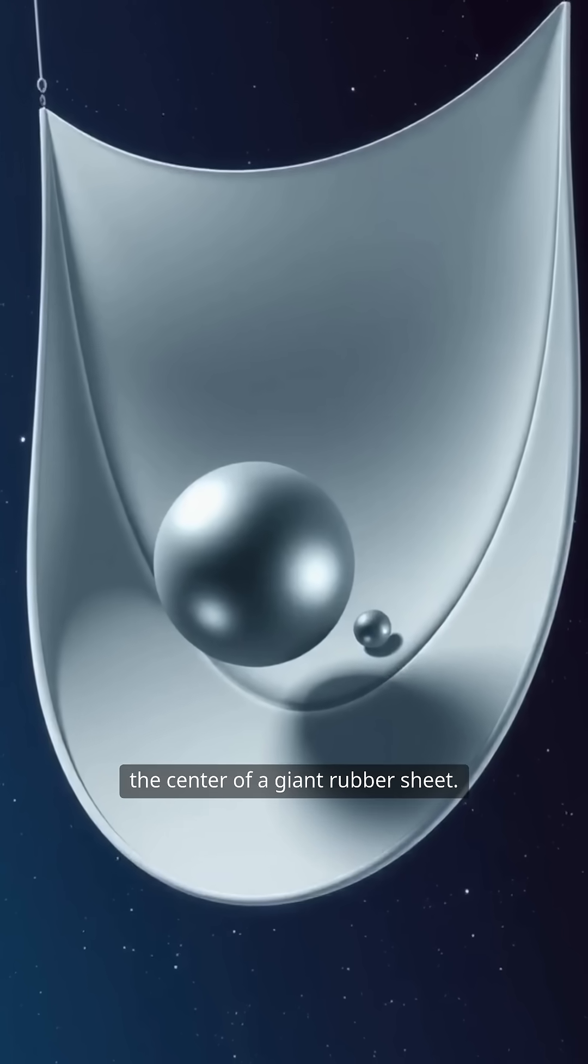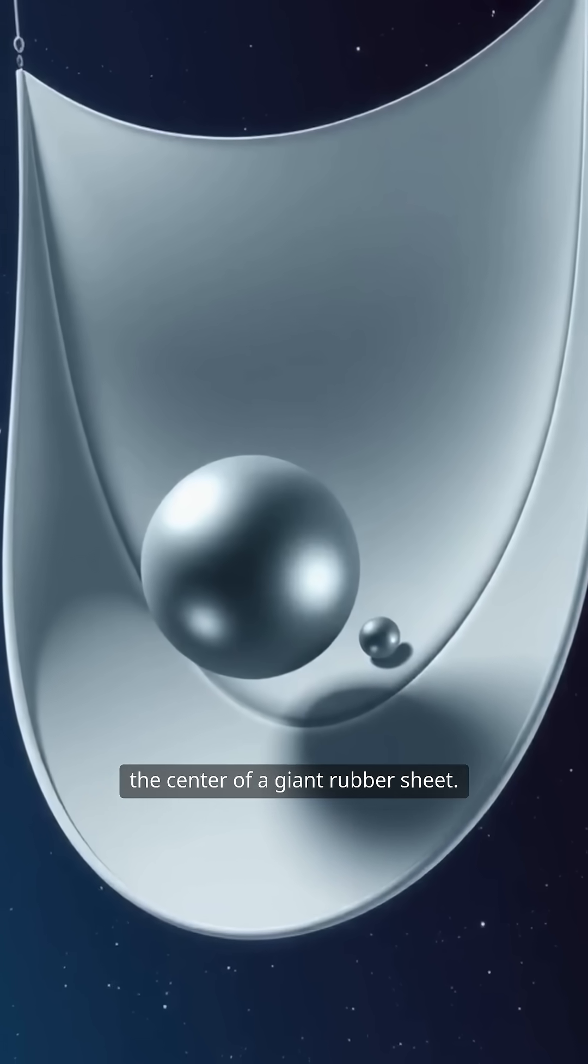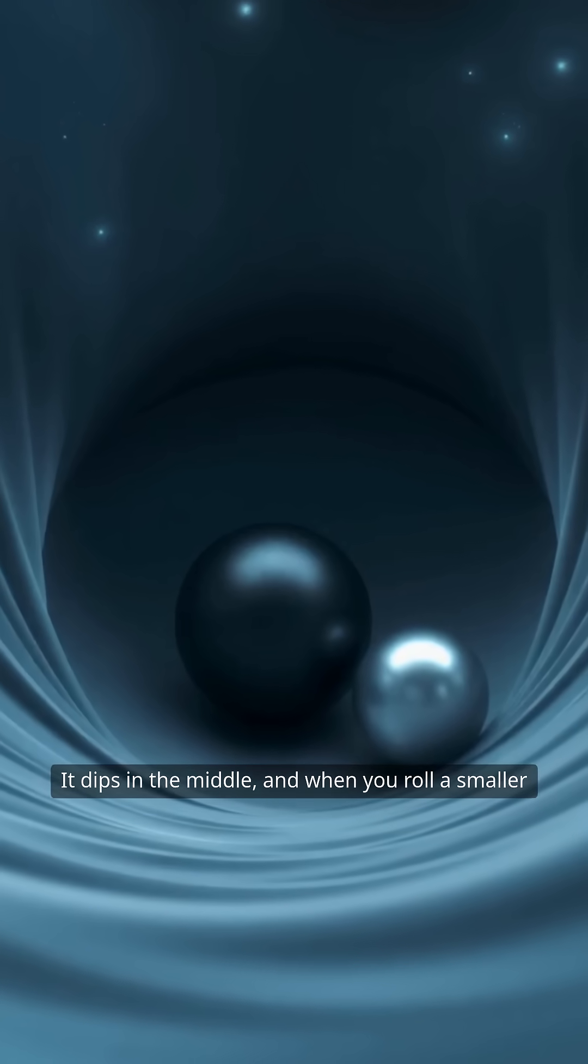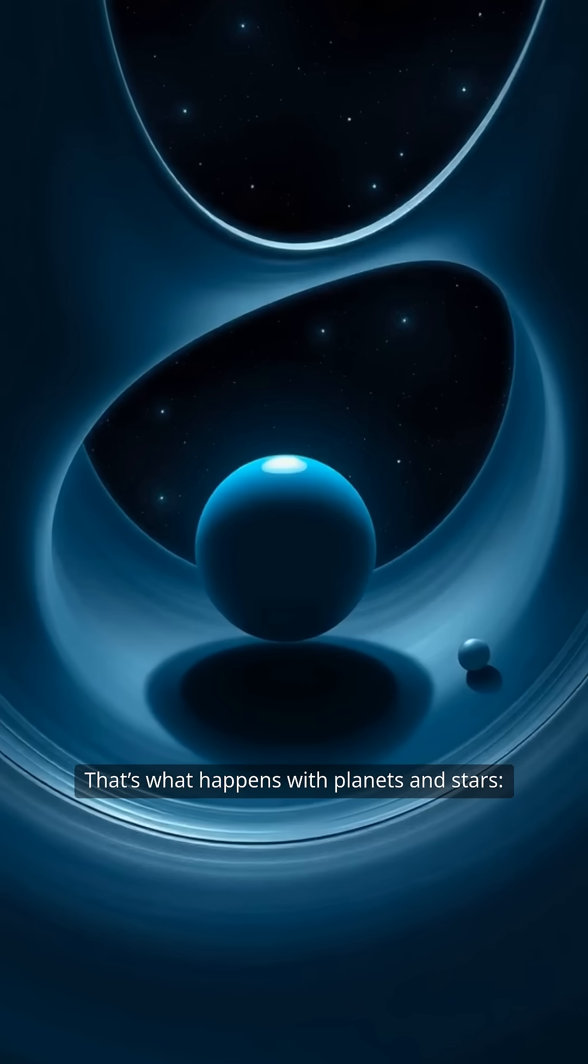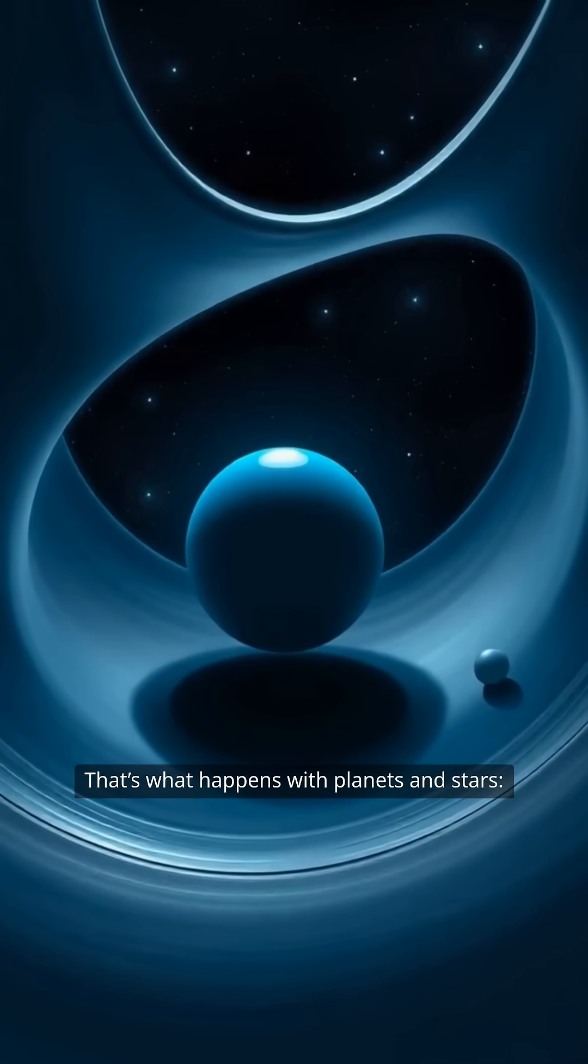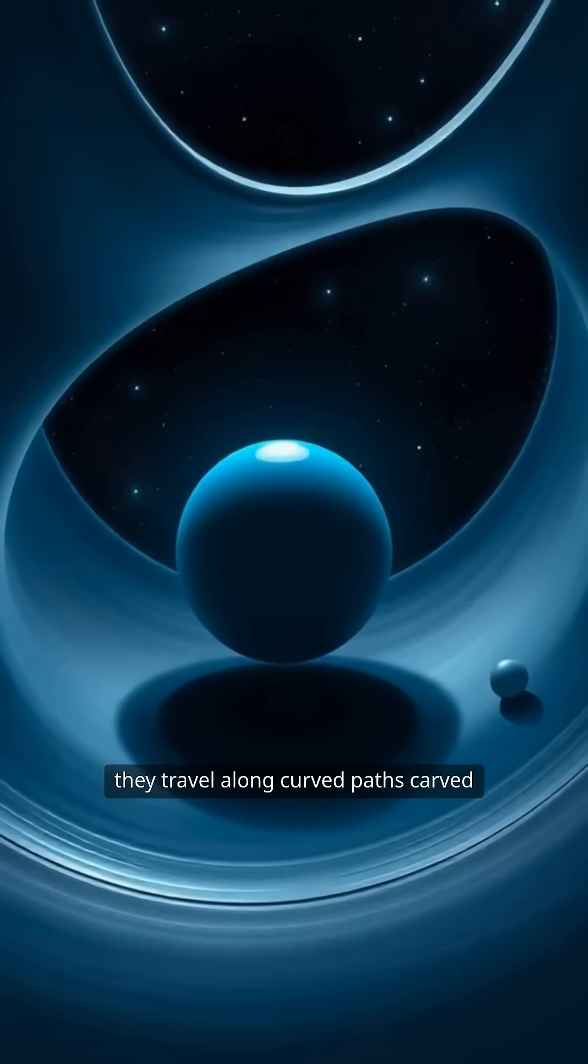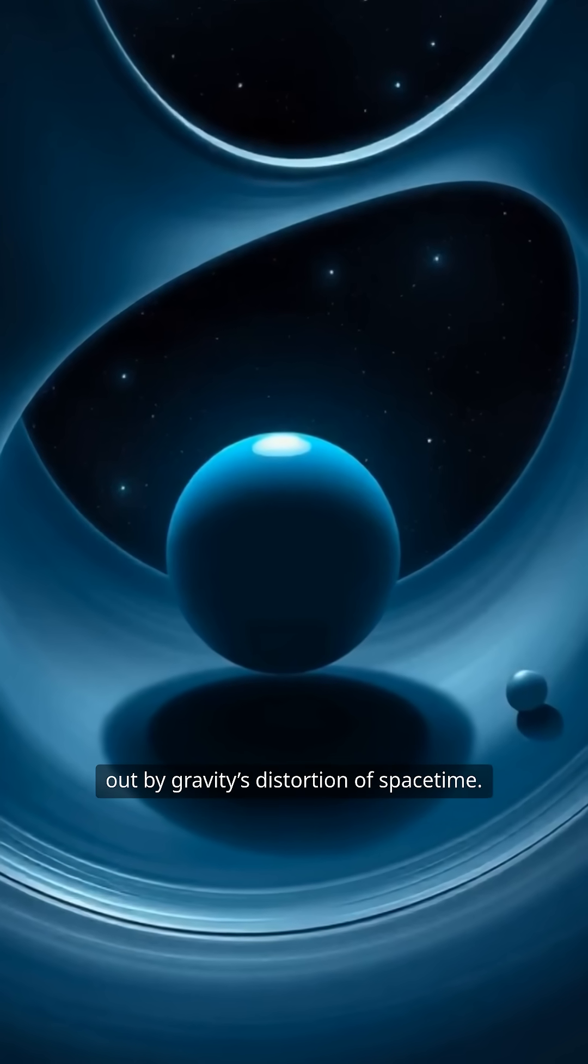Imagine placing a heavy ball in the center of a giant rubber sheet. It dips in the middle, and when you roll a smaller ball nearby, it spirals towards the center. That's what happens with planets and stars. They travel along curved paths carved out by gravity's distortion of space-time.